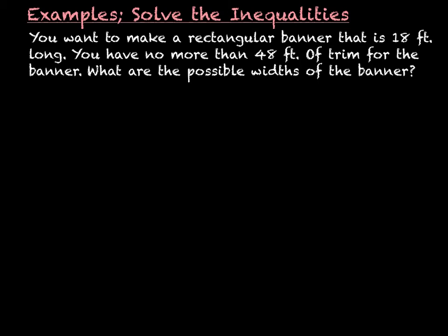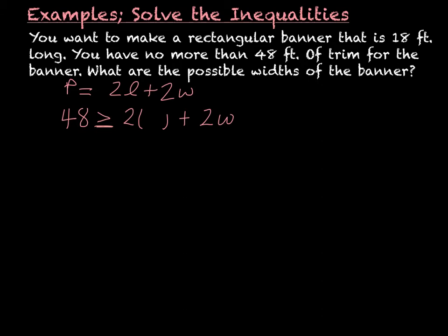Example five: you want to make a rectangular banner that is eighteen feet long. You have no more than forty-eight feet of trim for your banner. What are the possible widths of the banner? The first thing to note is that the perimeter is the same as the trim — we're talking about going around the outside. Perimeter equals two times length plus two times width. We can have no more than forty-eight, so forty-eight is greater than or equal to two times the length plus two times the width. The length is eighteen.